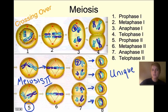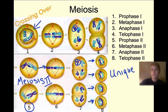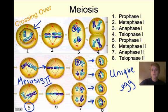At the very end, in Telophase II, we have four unique daughter cells. These are unique — they are all different from each other and different from the original cell they started with. They have different genetics, which is an extremely important component of genetic variability. These four cells, depending on whether it's a male or female organism, are either egg cells or sperm cells, because those are the only types of cells produced in meiosis.